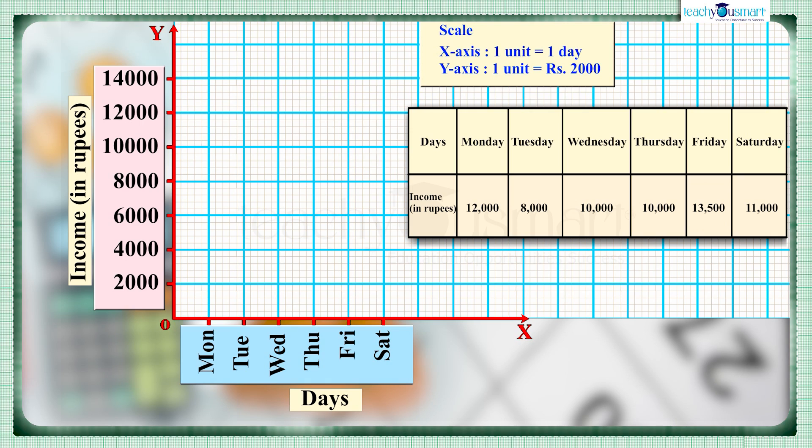Now we can mark the incomes corresponding to each day. On Monday it was 12,000 and it can be marked by a point or a dot. Similarly, on Tuesday 8,000, on Wednesday and Thursday 10,000, on Friday it was 13,500, and on Saturday 11,000.